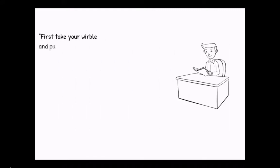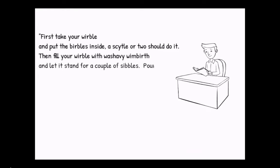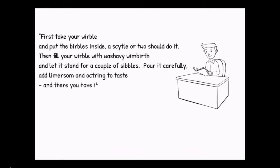First, take your worble and put the burbles inside. A skittle or two should do it. Then fill your worble with Washavi Wimberth and let it stand for a couple of sibyls. Pour it carefully, add Limassol and Octrine to taste, and there you have it. The perfect quad of mard.